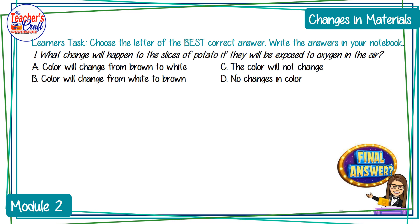A — color will change from brown to white; B — color will change from white to brown; C — the color will not change; or D — no changes in color.